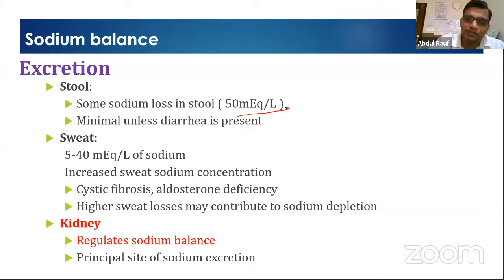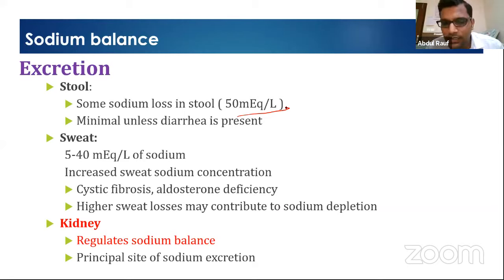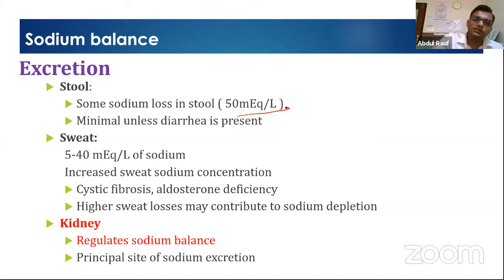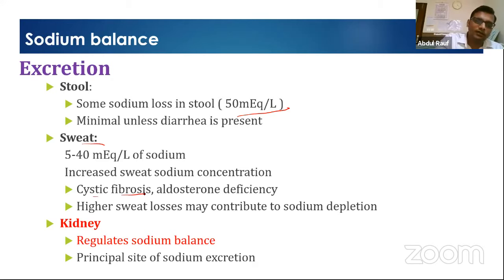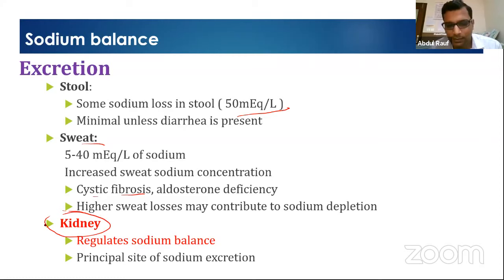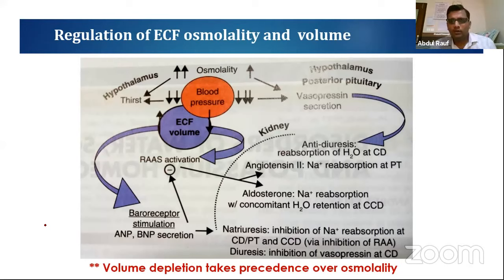In extremes of age — especially infants — who cannot regulate their thirst, with diarrhea they don't drink enough water, so that patient develops hypernatremic dehydration. That is why we classically see hypernatremic dehydration in infancy. Sweat is another route of sodium excretion, not usually significant but gains significance in cystic fibrosis. The main role is played by the kidney, which regulates sodium balance and is the principal site of sodium excretion.